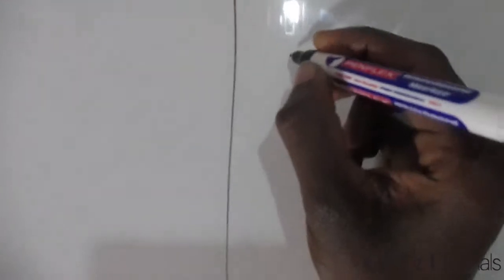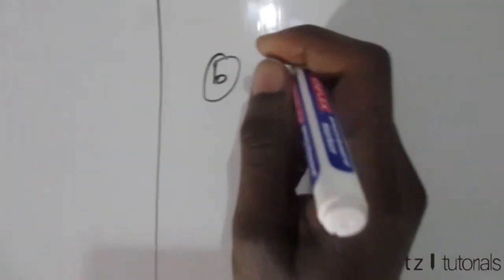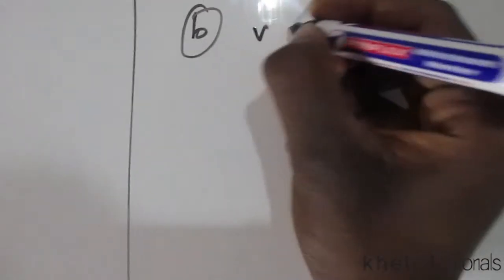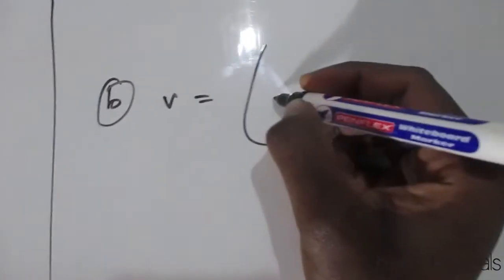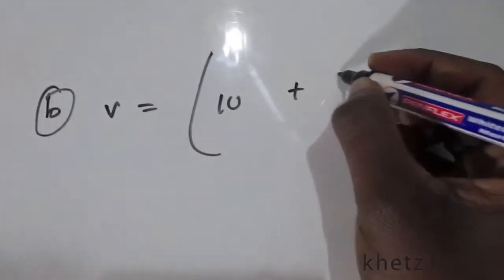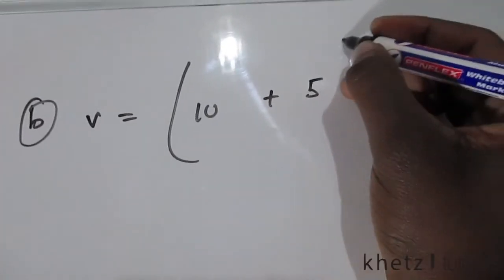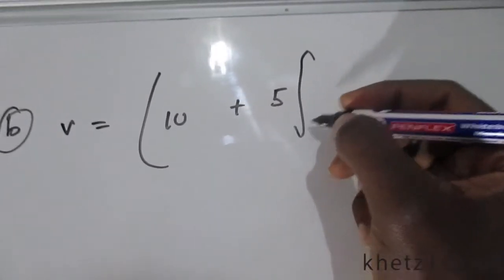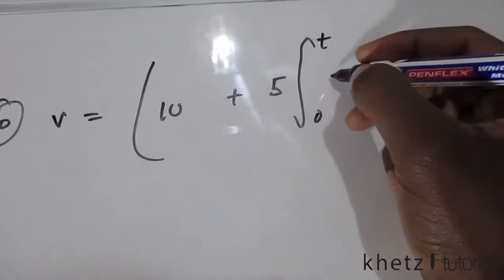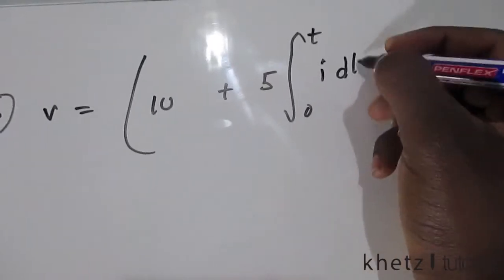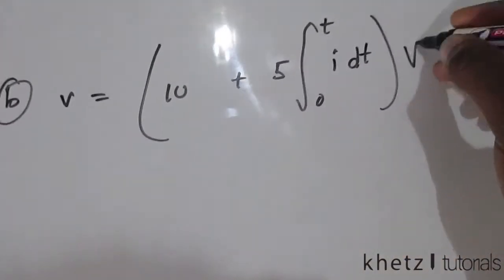Moving on to part B of the same question. Part B says the voltage is now 10 plus 5 integral from 0 to t over i dt watts.